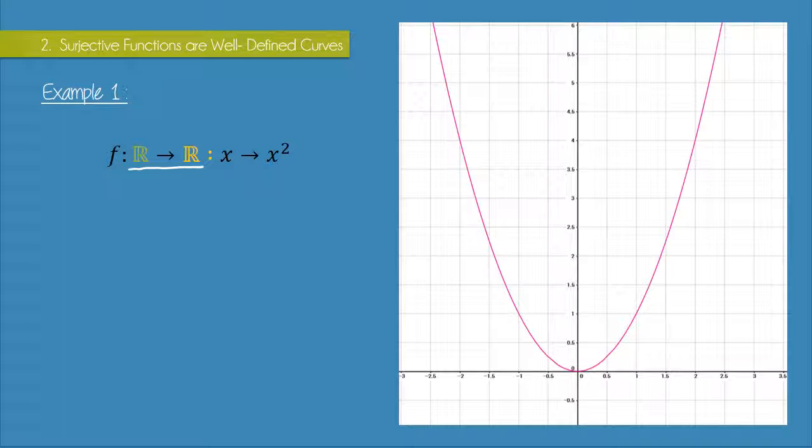If my function was, for example, f of x is equal to the square root of x and if I inputted a negative integer, then my output would be an imaginary number. So my codomain in that case would have to be the set of complex numbers even if my domain was the set of real numbers. Because I can get both real and imaginary outputs.